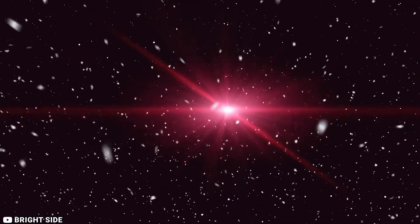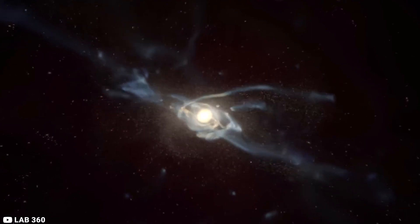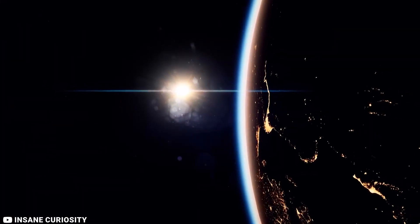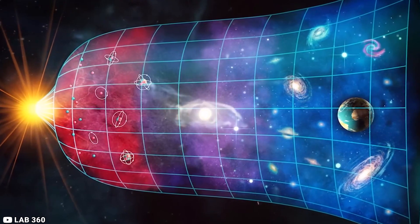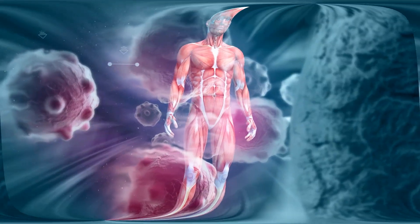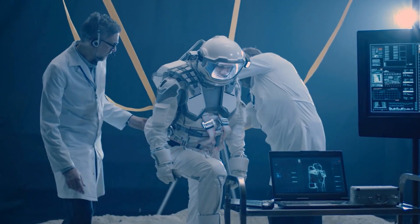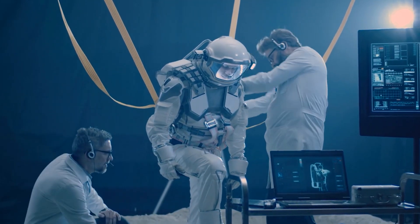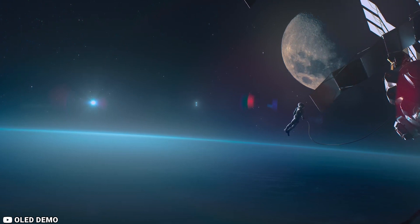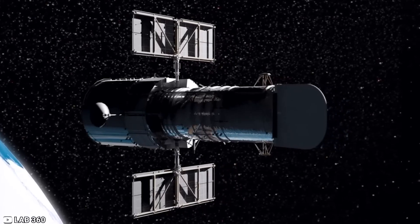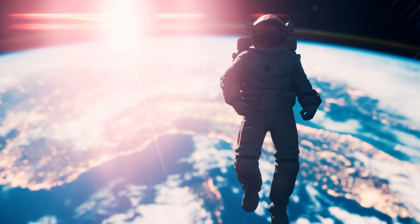The amount of radiation in space varies depending on the source of the radiation and the distance from the source. For example, the radiation levels near the Earth are much lower than the radiation levels near the Sun. Radiation can damage human cells and cause cancer. That's why it's important for astronauts to limit their exposure to radiation. Astronauts limit their exposure to radiation by spending time in shielded areas of spacecraft and by wearing special suits and helmets.